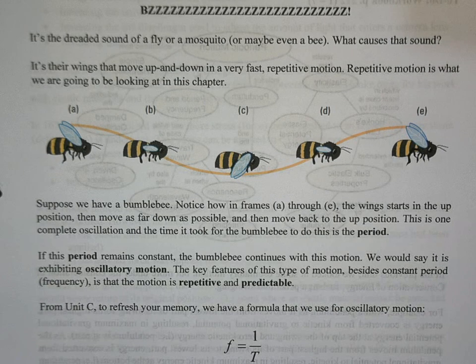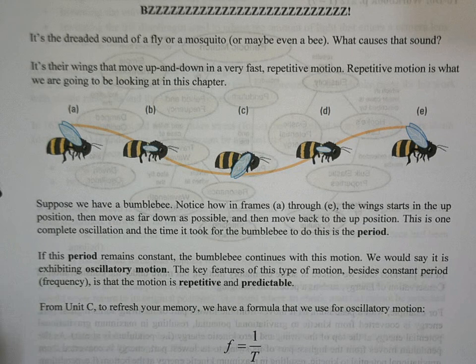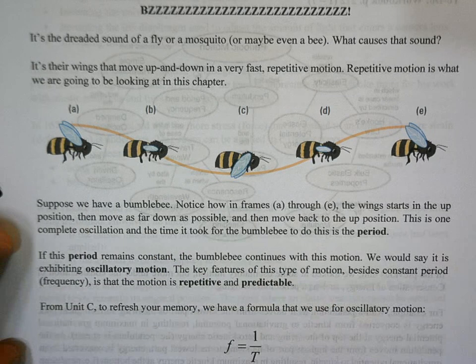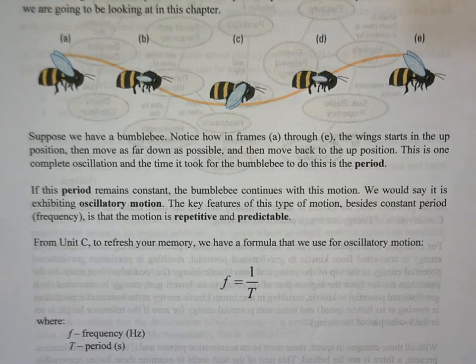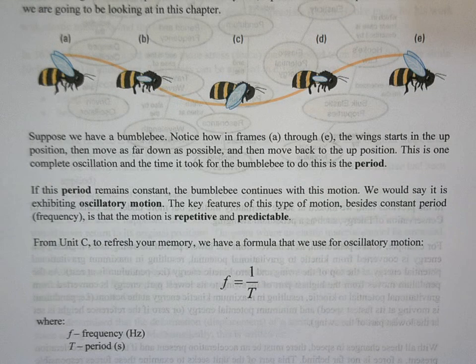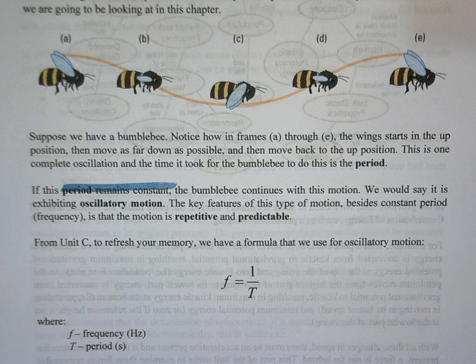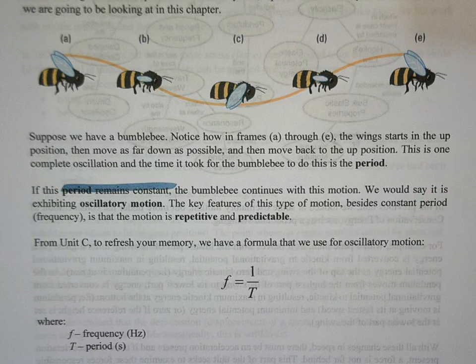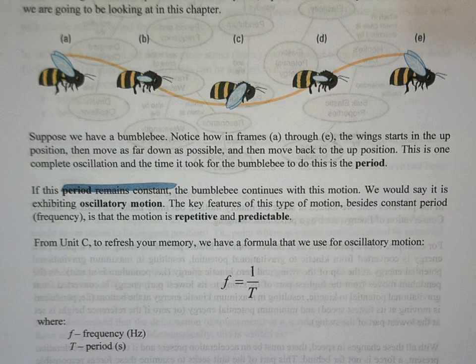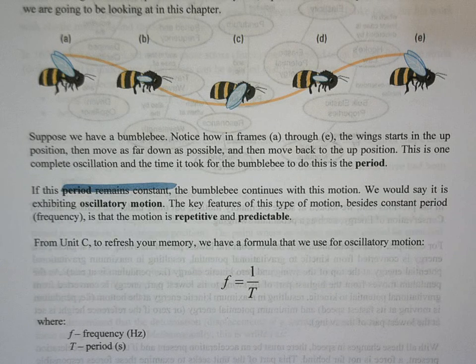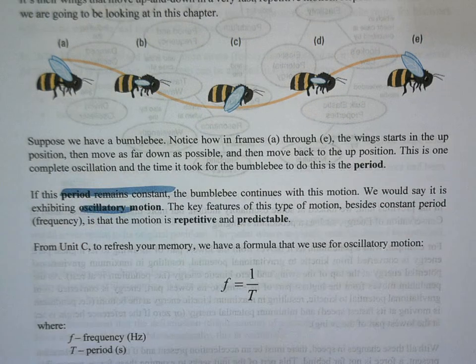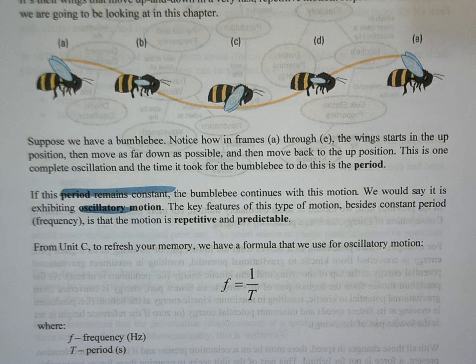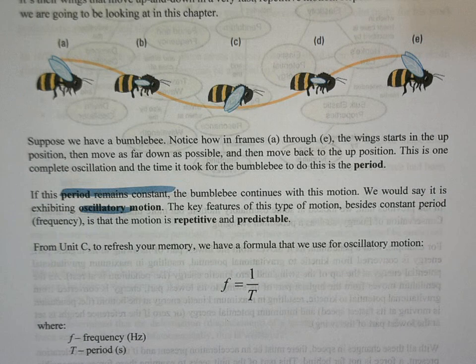So when we talked in the last unit about this thing called period, the period would represent the time it takes for the bee to flap its wings down and back up. Now, what we are interested in for the time being is keeping this period constant. If this period remains constant, what we would say is that this bumblebee with its wings is exhibiting this thing called oscillatory motion. So we're doing a back and forth that's very repetitive. So we do want constant period.